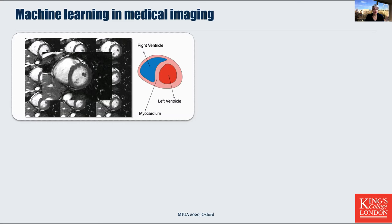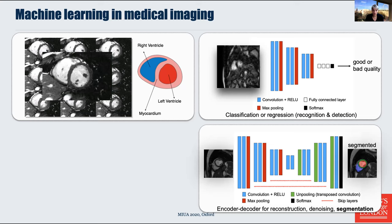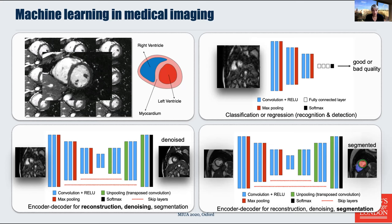To apply machine learning in medical imaging, you need a lot of data. Once we have that, we can actually train neural networks for simple tasks. For example, here is a simple classification or regression network, which can also be used for detection. This is an encoder-decoder architecture, which is very popular for image segmentation but can also be used for reconstruction or denoising. Because we're looking at cardiac magnetic resonance imaging, we can also look directly at the k-space data and train networks to infer knowledge directly.